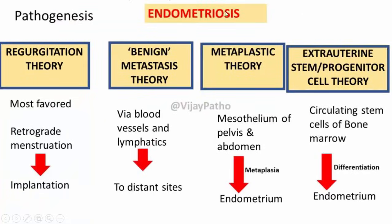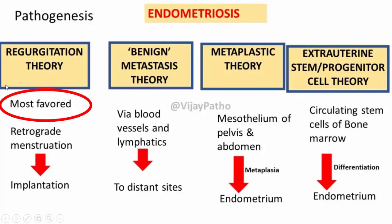Quick summary: the pathogenesis of endometriosis can be explained by four theories. The most favored is the regurgitation theory, involving retrograde menstruation leading to implantation. The benign metastasis theory involves transport via blood vessels and lymphatics to distant sites. The metaplastic theory involves coelomic metaplasia where the mesothelium of the pelvis and abdomen converts into endometrial tissue. Finally, there is differentiation of circulating bone marrow stem cells into endometrial tissue. The regurgitation theory is the most favored.